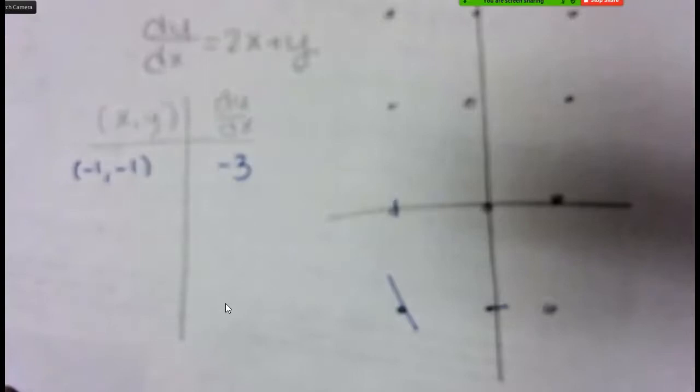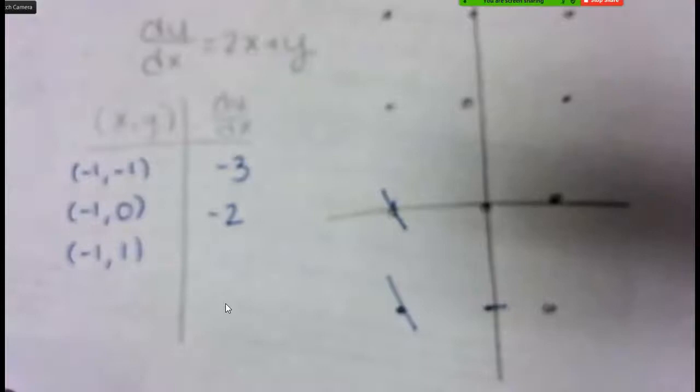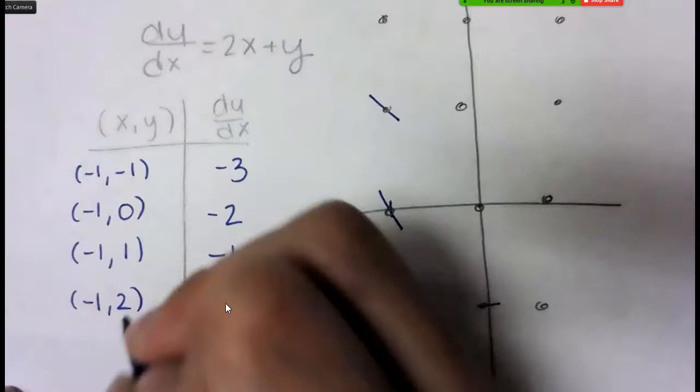So that means I need to draw a line with a slope of negative 3. If you picked negative 1 comma 0, that's that point right here. So that would be a slope of negative 2. So this line is a little less steep than the slope you just drew in, but still negative and down. You could pick negative 1, positive 1. So now you have negative 2 plus 1, which is negative 1. So again, a little less steep and still down. At negative 1, 2, you'd get negative 2 plus 2, which is 0. So it flatlines.